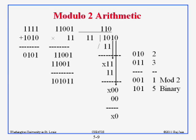In mod-2 arithmetic, 1+1 becomes 0. In regular binary, 2+3=5, but in mod-2, 2+3=1. That's the key difference. You cannot use a calculator — you must do it bit by bit using XOR.